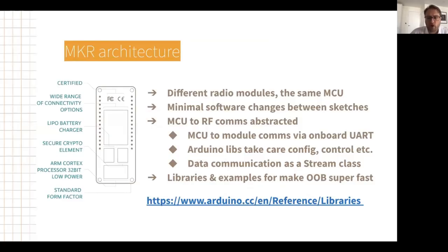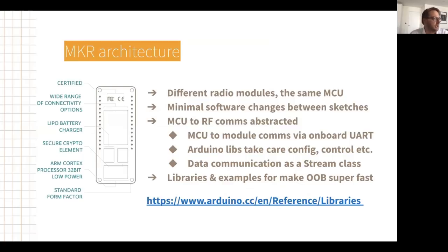As we were describing, this is the fundamental architecture — each board has a different connectivity module but the same microcontroller. The libraries really abstract the detail of configuring these comms modules from the user, so you're just instantiating them with a very high-level bit of code. Swapping between Wi-Fi and GSM is very easy. Most of the time you'd be using HTTP, MQTT, or some other transport library, and swapping between connectivity options is quite straightforward.